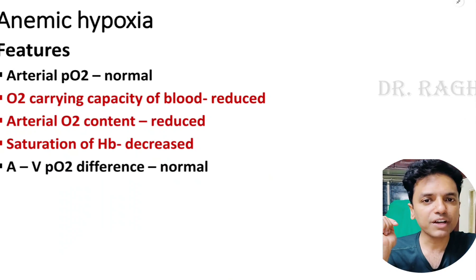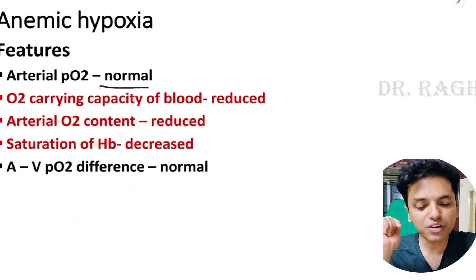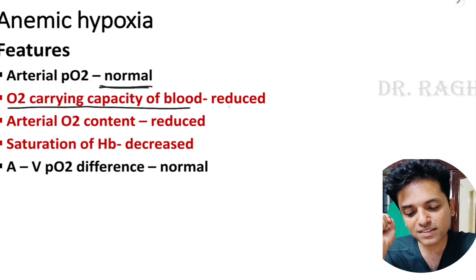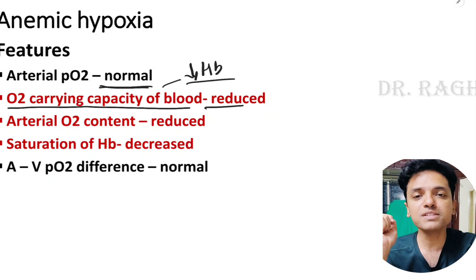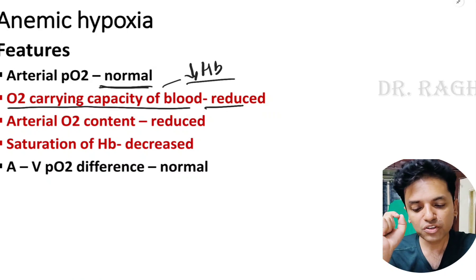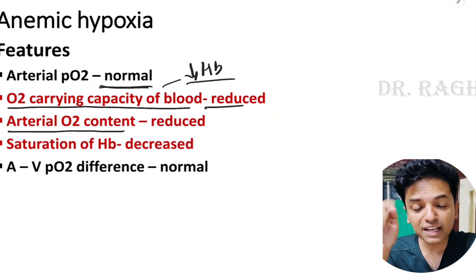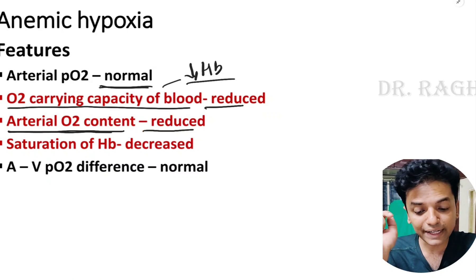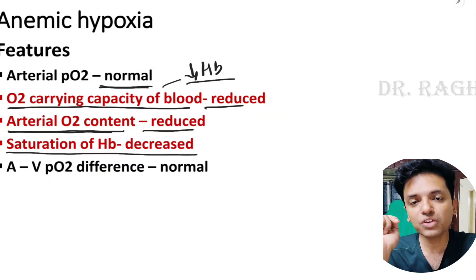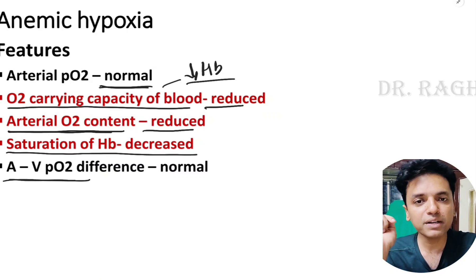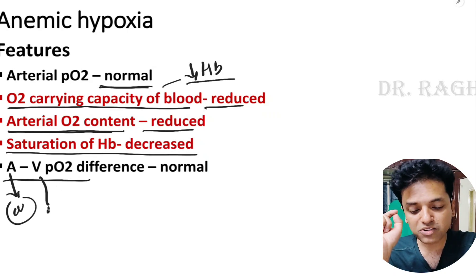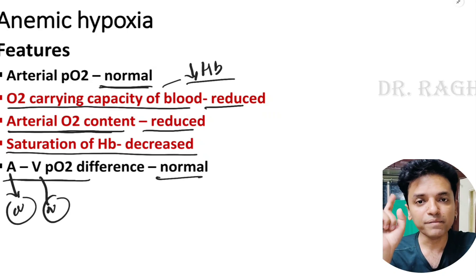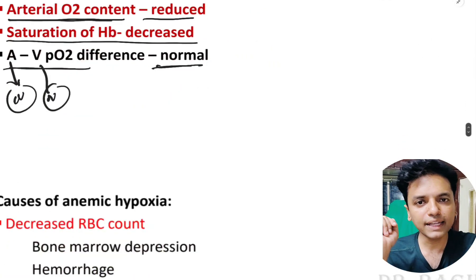In anemic hypoxia, arterial pO2 is absolutely normal, but oxygen carrying capacity of the blood is reduced due to reduction in either RBC count or hemoglobin concentration. Therefore arterial oxygen content is reduced, and hemoglobin saturation is also reduced. The a-minus-v pO2 difference is normal, because arterial pO2 and venous pO2 are both normal.